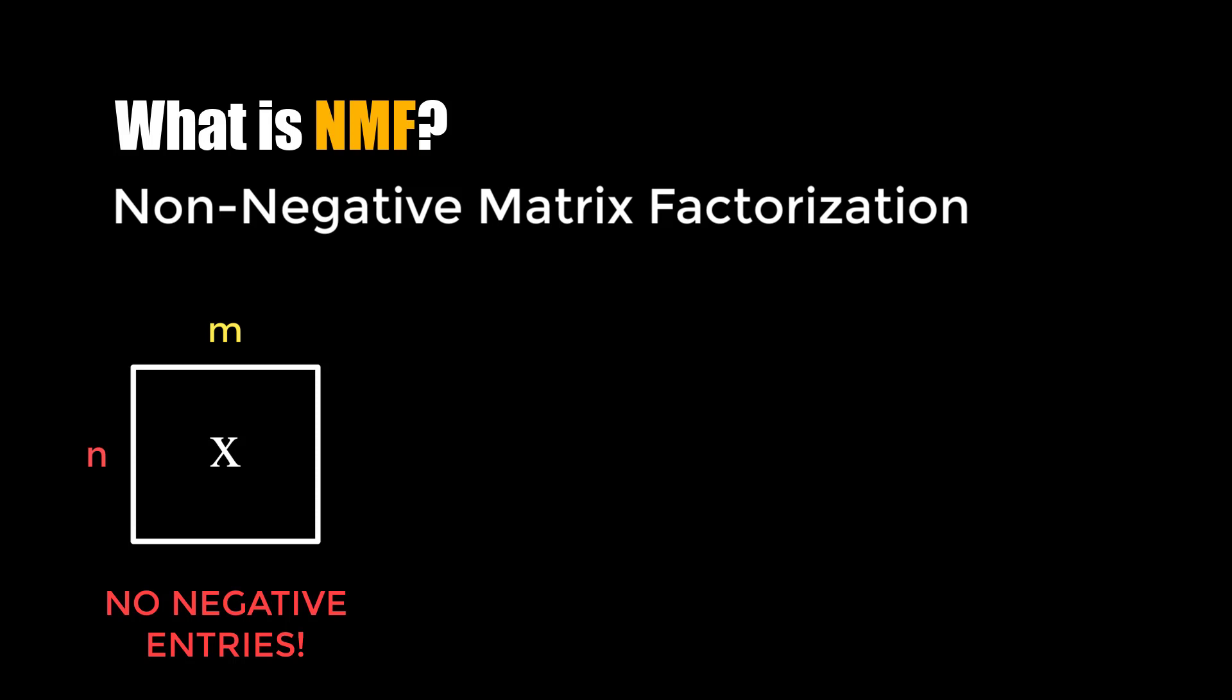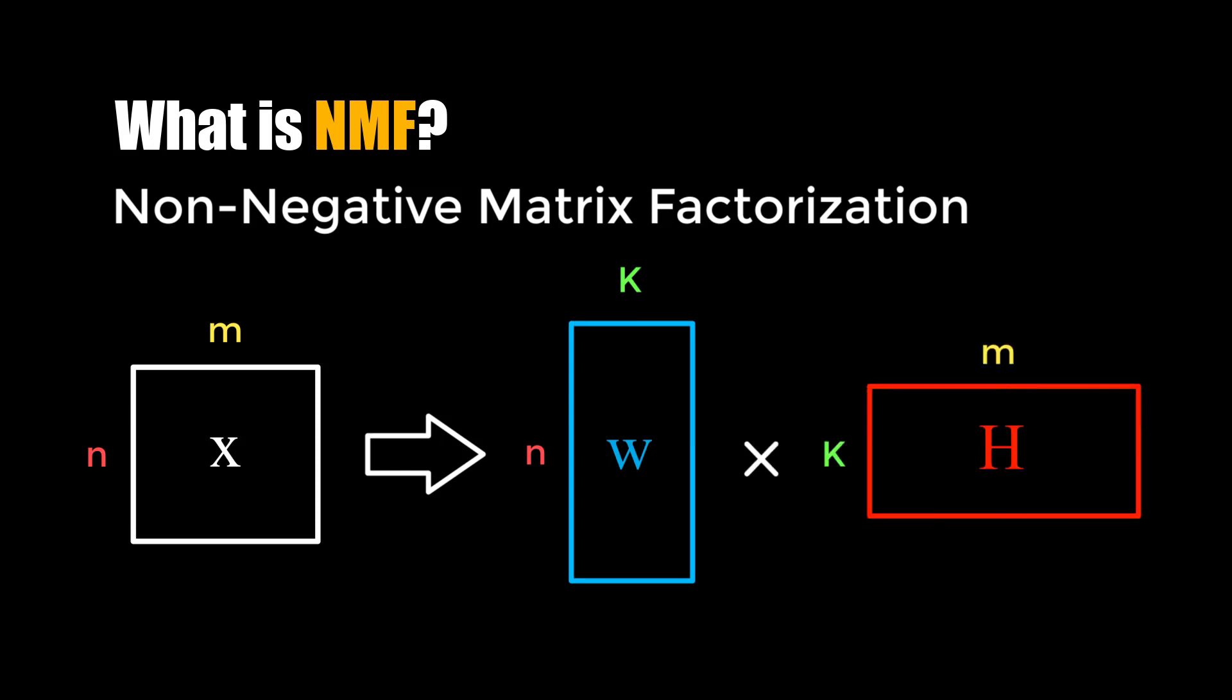By non-negative matrix I mean it doesn't have any negative entries, and we want to factorize this matrix into two non-negative matrices W and H in the way that W is n by k and H is k by m.